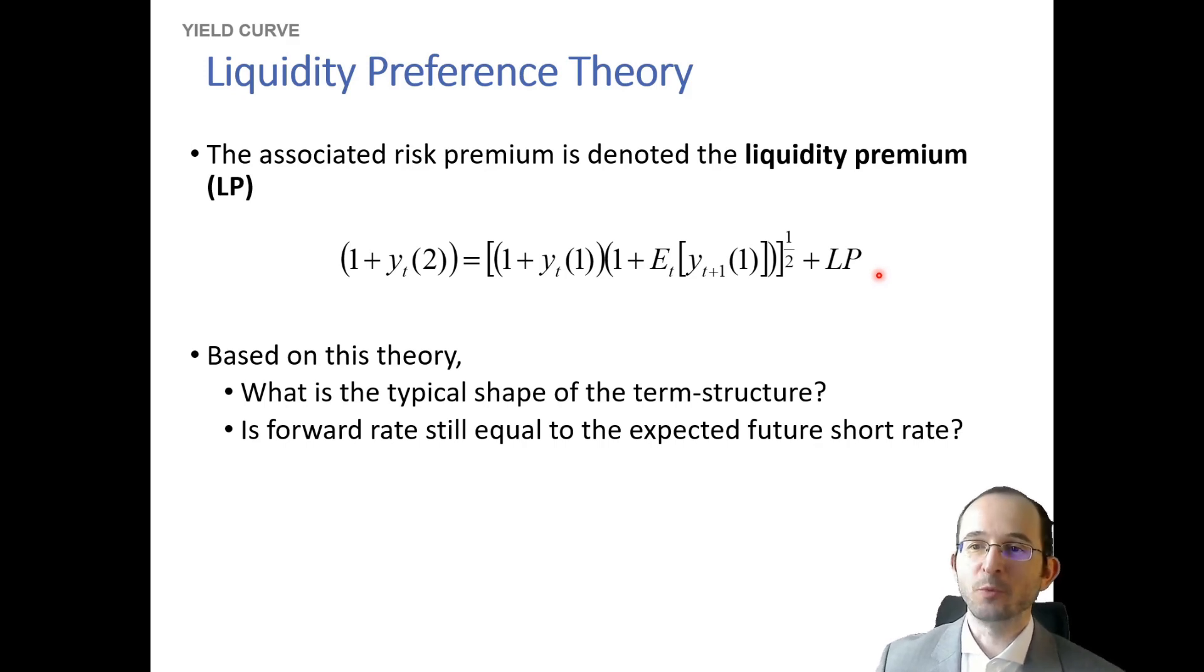So let's look at an example of what that would actually do. First of all, what shape that would actually induce in our term structure now, and furthermore, how that would affect the relation between the forward rate and the expected future rate. Remember, under the expectations hypothesis, those two are the same. What would they be like if we introduce a liquidity premium?